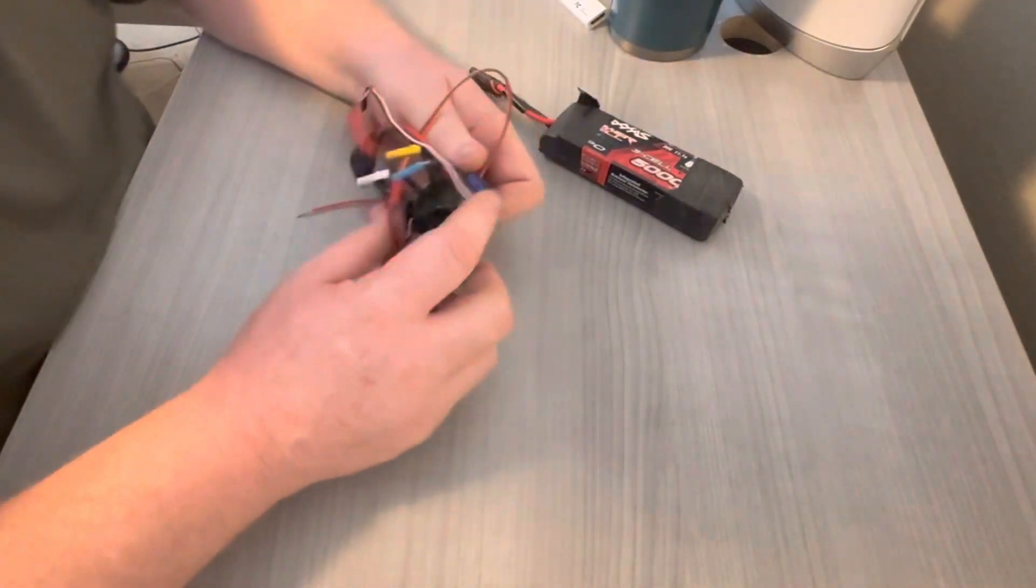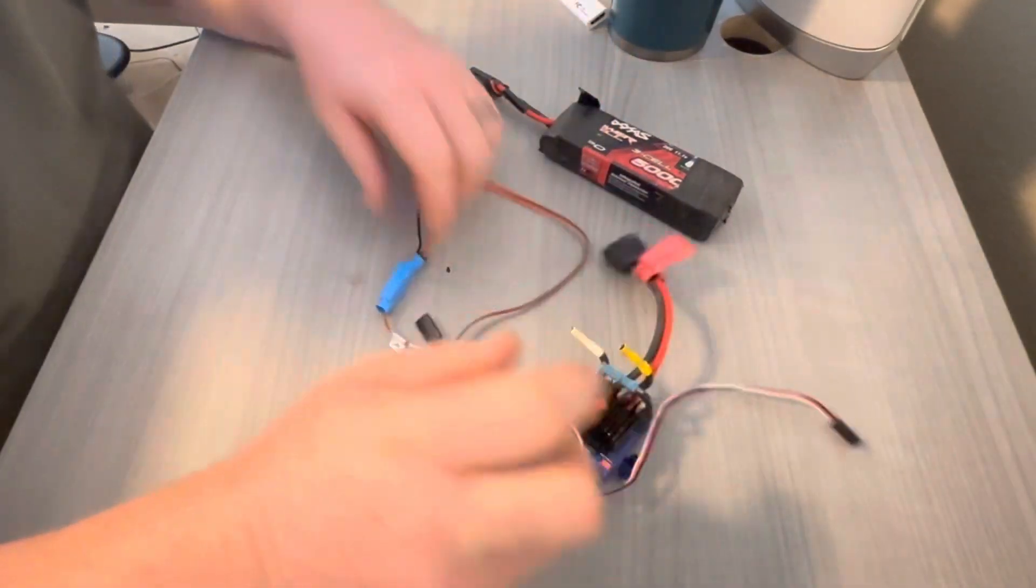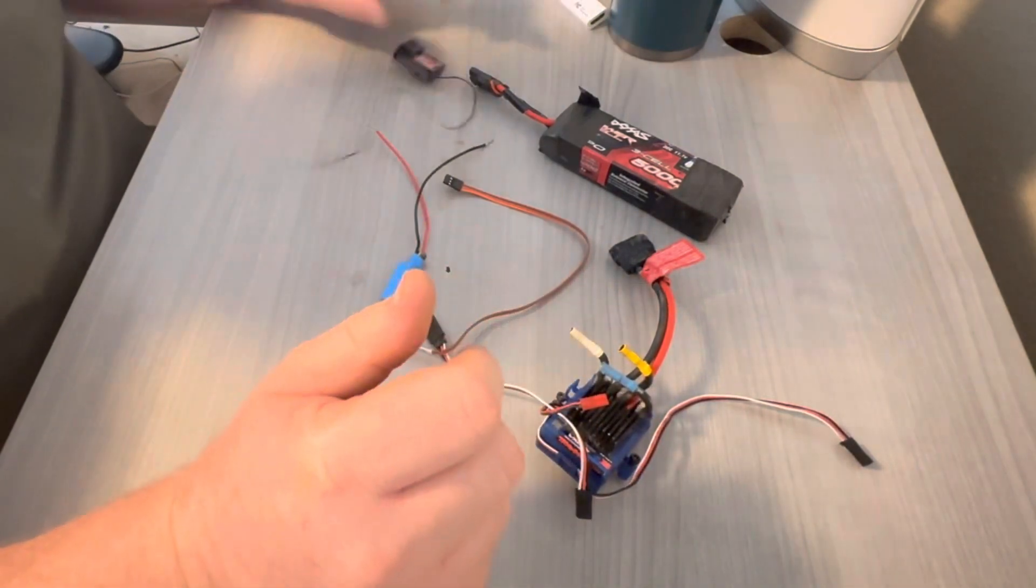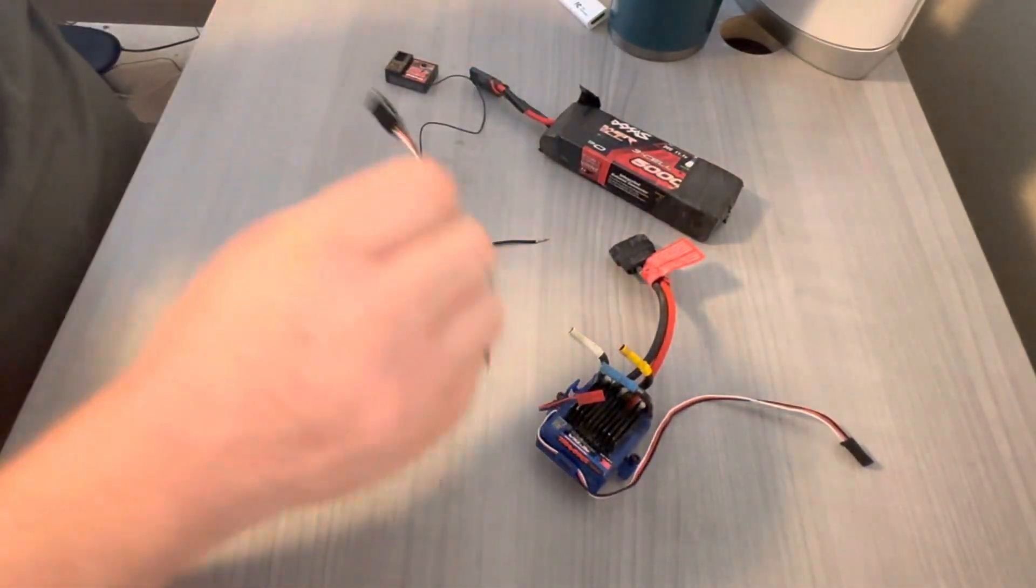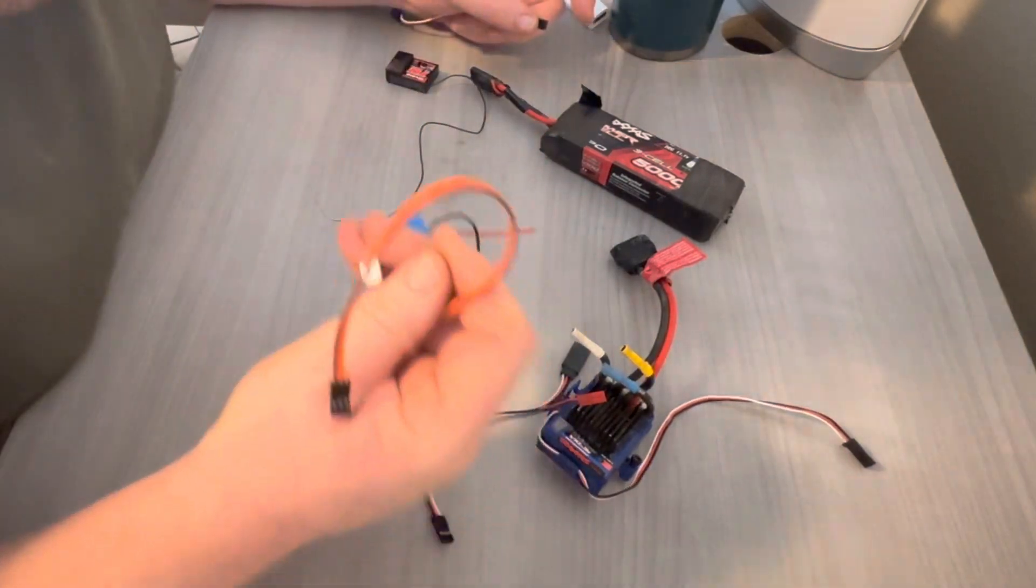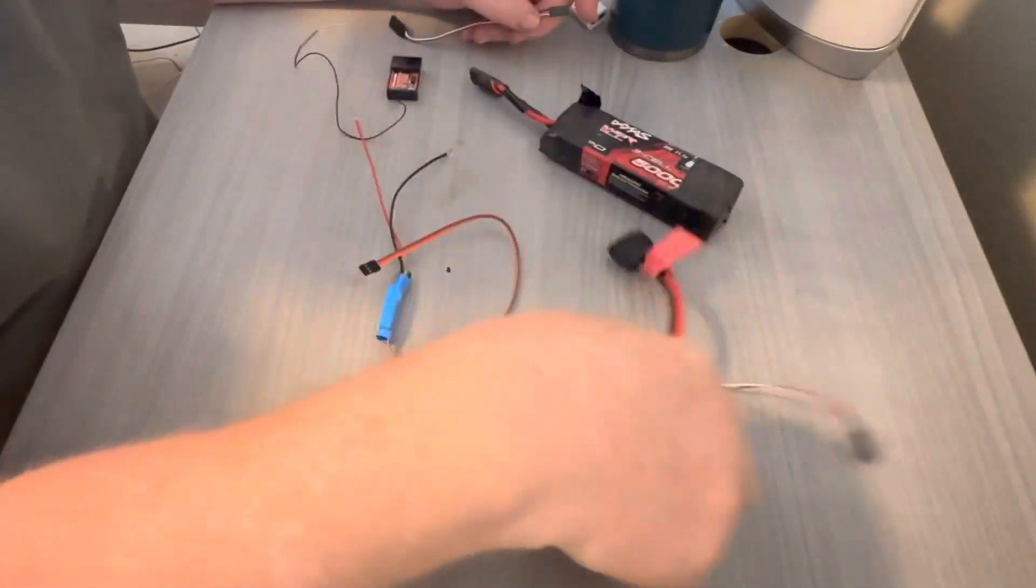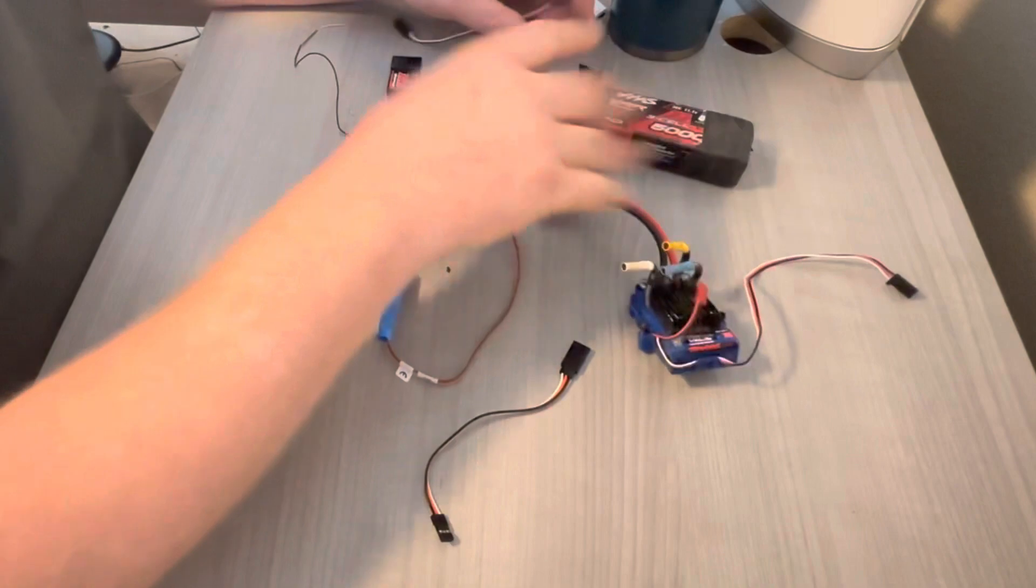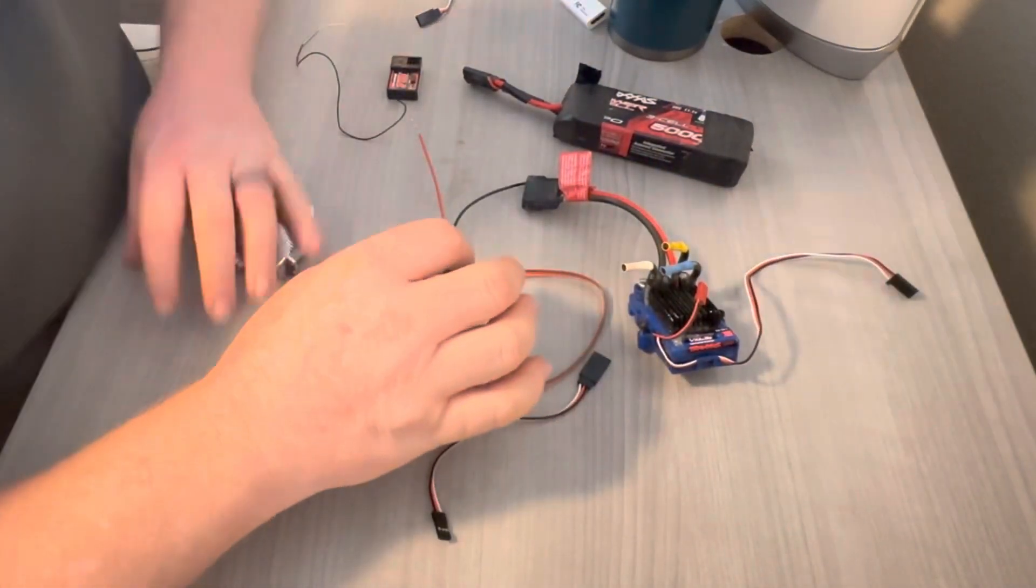It's really simple. You just need to bypass the power. You can't run the power into the receiver because you'll completely cook it. So what you need is your BEC, receiver, and servo.